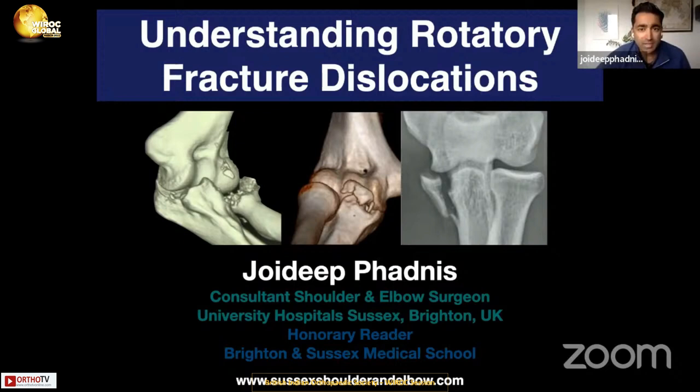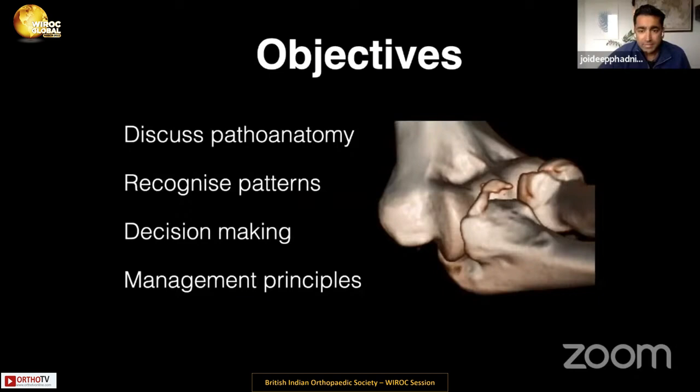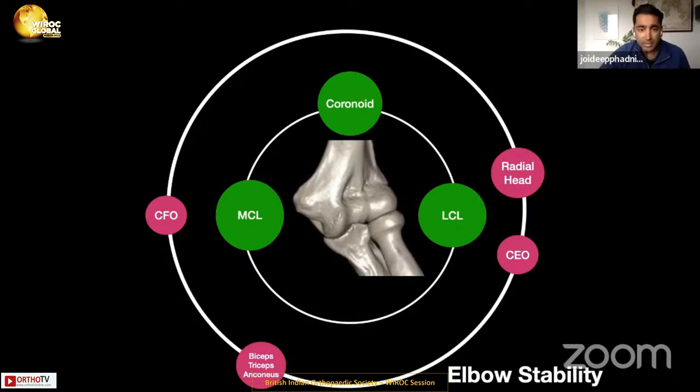Fracture dislocations of the elbow. I'm going to talk about understanding rotatory fracture dislocations — those injuries involving a coronoid fracture, a radial head fracture, and a subluxation or dislocation of the elbow. My name is Jody Badness. I work in Brighton as an elbow surgeon in the UK. The real emphasis of the talk is discussing the pathoanatomy of these injuries, how we can recognize injury patterns, and how this influences our decision-making and management principles.